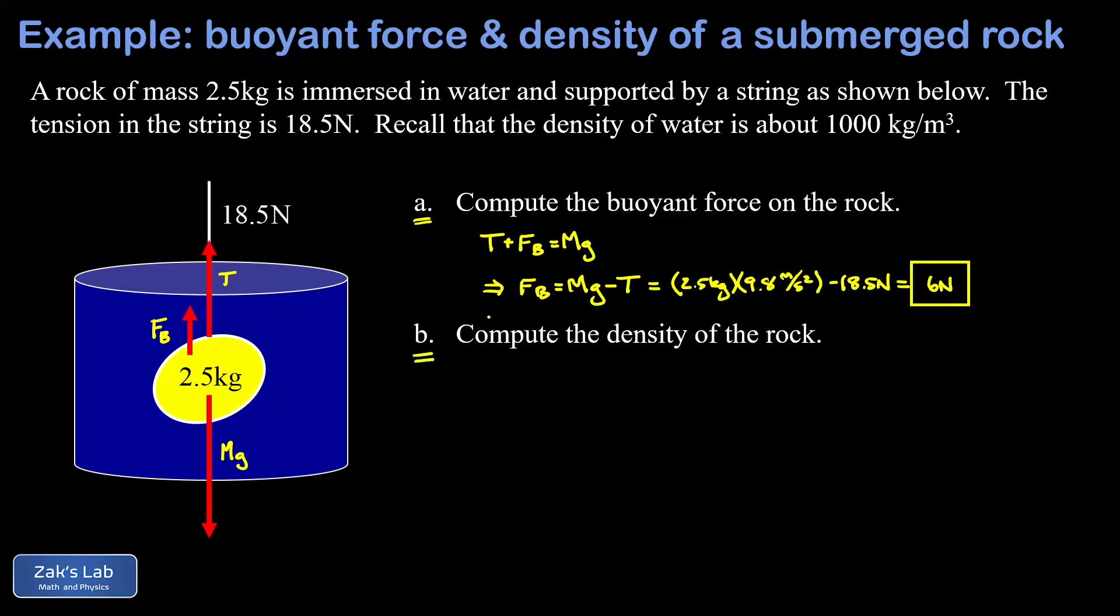Now in part b we want to calculate the density of the rock. Quick reminder on the definition of density: we use the Greek letter rho for that. The density of the rock is going to be the mass of the rock (big M) divided by the volume of the rock. The buoyant force is related to the volume of the rock.